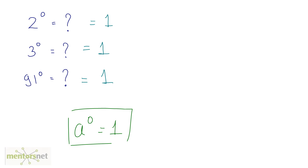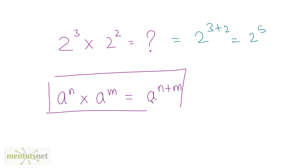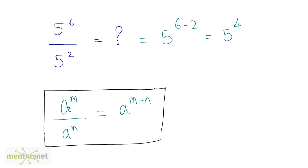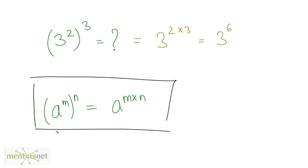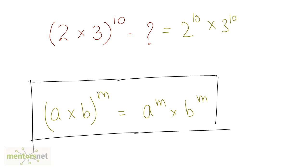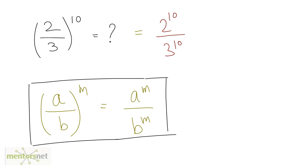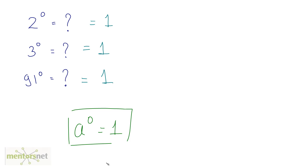To recap all these laws: a raised to n times a raised to m gives a raised to n plus m — when you have multiplication, you add the powers, provided the bases are the same. For division, you subtract the powers. If you have a raised to m, the whole raised to n, you multiply the powers to get a raised to m times n. If you have a times b, the whole raised to m, you split the power to each term: a raised to m times b raised to m. If you have a by b, the whole raised to m, you split the power to numerator and denominator: a raised to m by b raised to m. And lastly, anything raised to 0 is equal to 1.